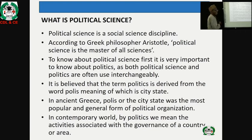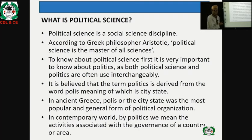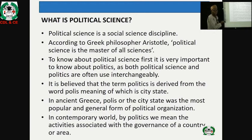The big question is: what is political science? Political science is undoubtedly a social science discipline because it attracts methodology, analysis, and contributions from other social sciences. According to Greek philosopher Aristotle, political science is the master of all sciences — it is a cross-disciplinary kind of course because administration, sociology, and economics are all part of political science.